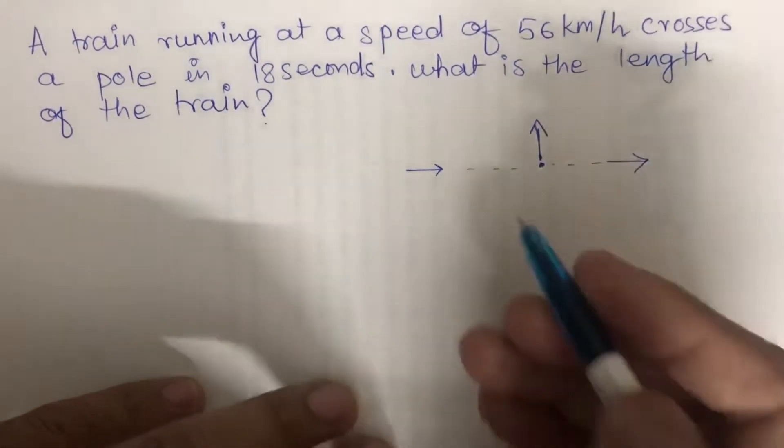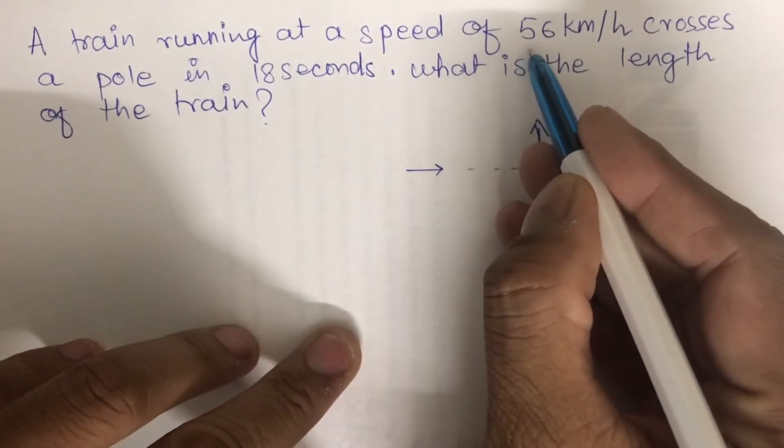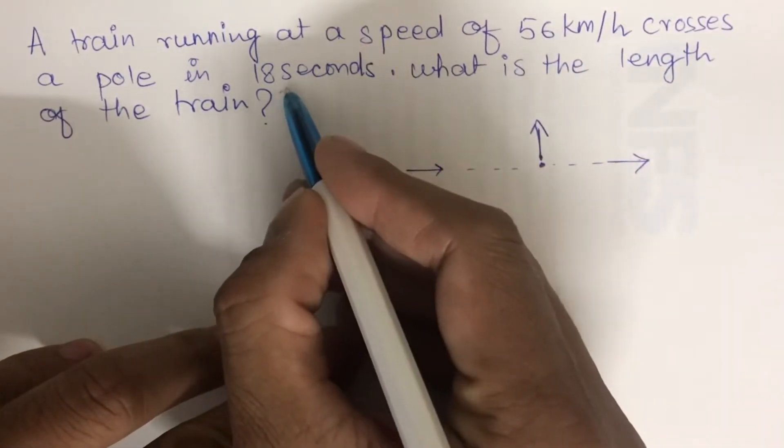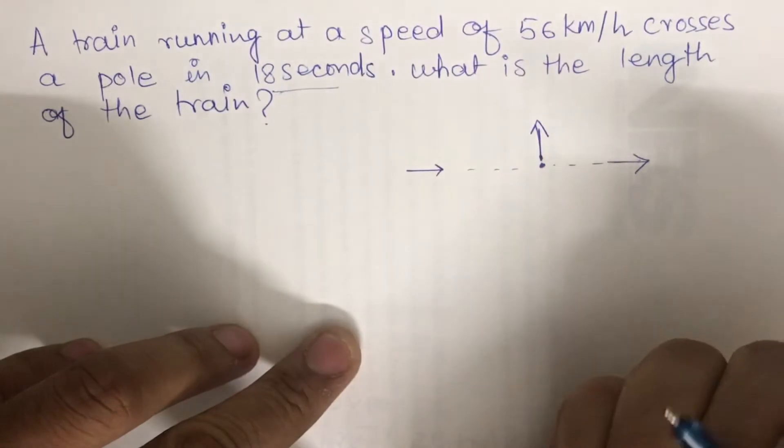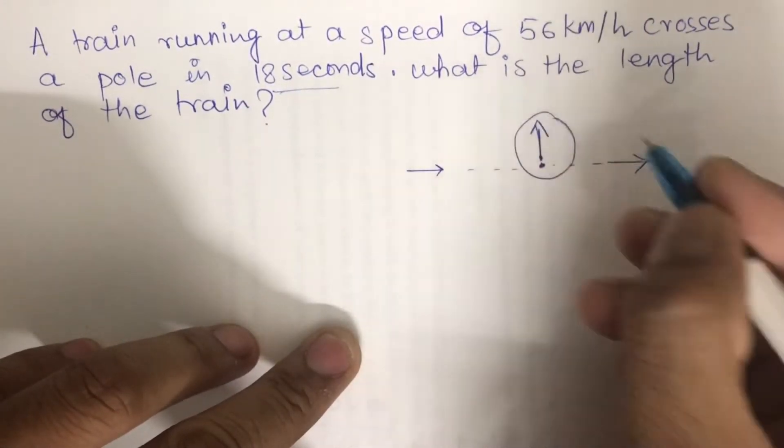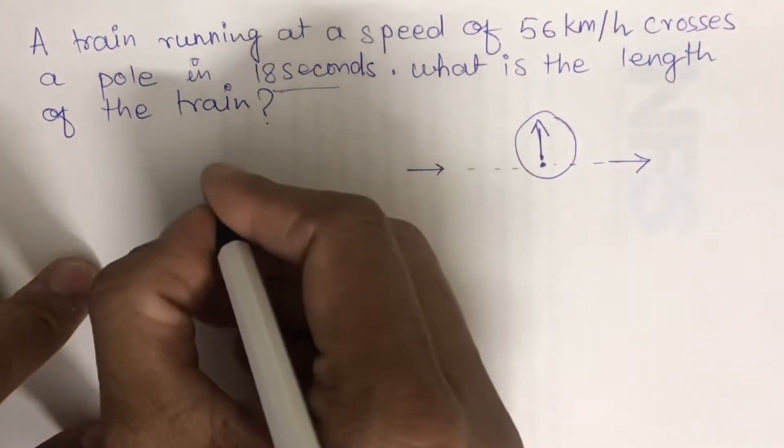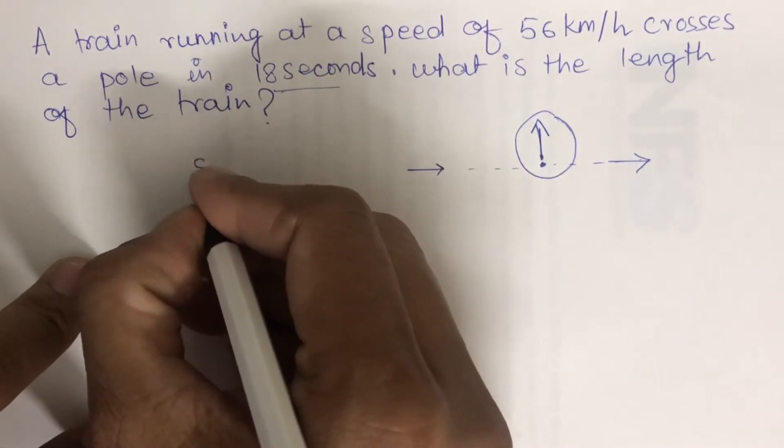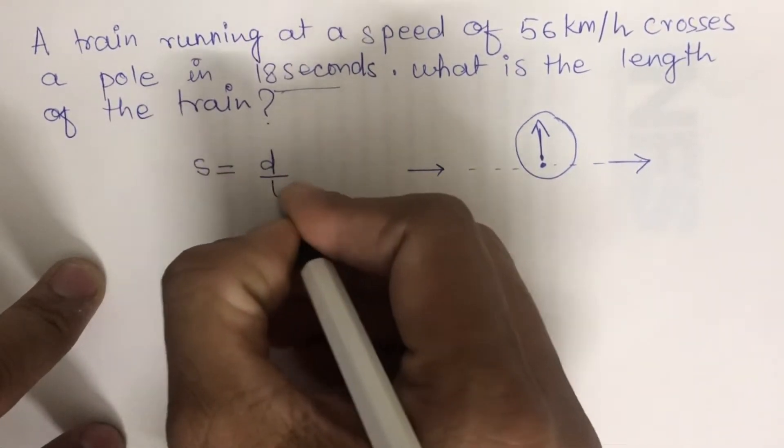We are given the speed of the train and the time in which it crossed the stationary pole. The basic formula is: speed equals distance upon time.